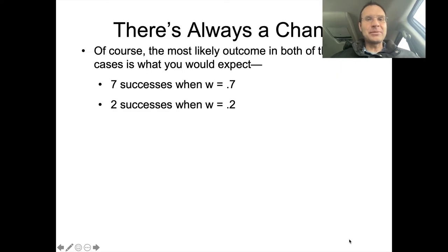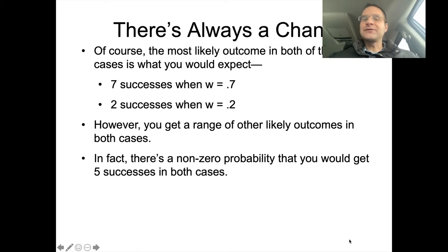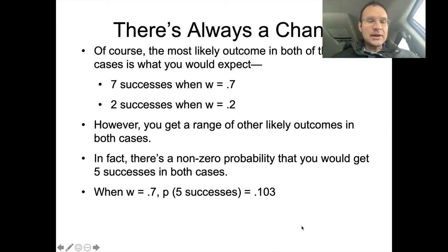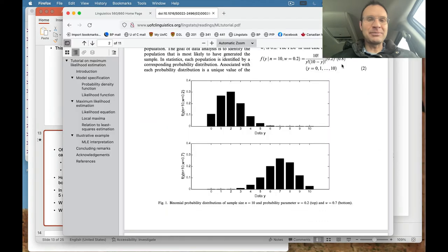The most likely outcome in both cases is what you'd expect: seven successes when W equals 0.7, two successes when W equals 0.2. But you get a range of other likely outcomes in both cases. Let's focus on five — there's a non-zero probability you'd get five successes in both cases. When W equals 0.7, the probability of five successes is 0.103; when W equals 0.2, it's 0.026.